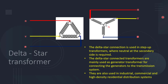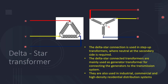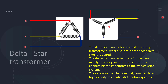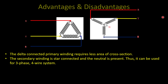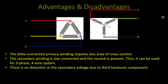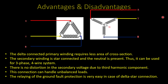Another one is delta-star transformer. The delta-star connection is used in step-up transformers where neutral at the secondary side is required. Delta-star transformers are mainly used as generator transformers for connecting generators to the transmission system. They are also used in industrial, commercial, and high-density residential distribution systems. Advantages: the delta-connected primary winding requires less cross-section area. The secondary is star-connected with neutral present, so it can be used as a three-phase four-wire system. There is no distortion in secondary voltage due to third harmonic components. This connection can handle unbalanced loads and ground-fault protection relaying is easy. This is the most commonly used step-down transformer and can be seen in gated societies or apartment complexes.